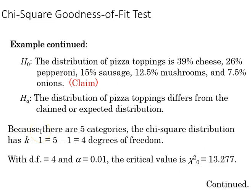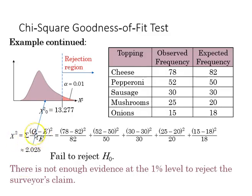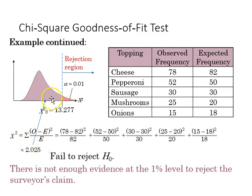Because there are five categories, k minus one gives us four degrees of freedom. With four degrees of freedom at the 0.01 alpha level, our critical value from the chi-square table is 13.277. Using our formula — the sum of the observed minus expected squared over the expected — we get a test statistic of 2.025. Since 2.025 is not in the rejection region, we fail to reject the null hypothesis. There's not enough evidence at the one percent level to reject the surveyor's claim, which means they could be right.